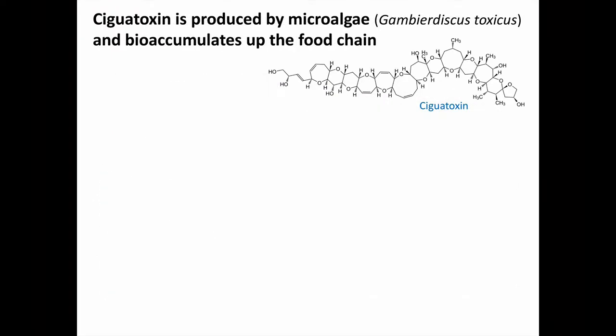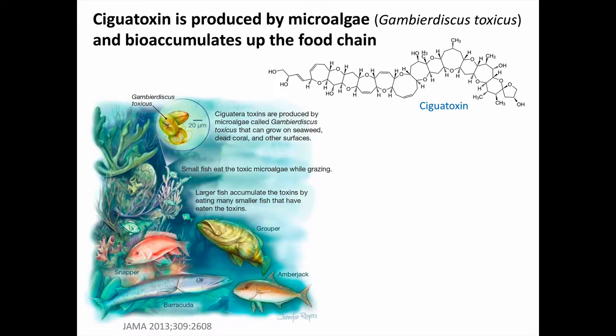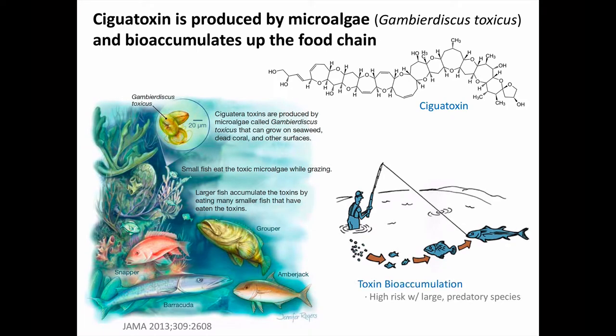The complex molecule pictured here is ciguatoxin, which is produced by the dinoflagellate microalgae Gambierdiscus toxicus, which bioaccumulates up the food chain. When environmental conditions are right — or rather when they're wrong — ciguatoxin is produced, and the toxic microalgae are consumed by smaller fish, which are eaten by larger fish, and so on, such that the larger predatory fish species contain enough toxin to affect the humans that catch and eat them.